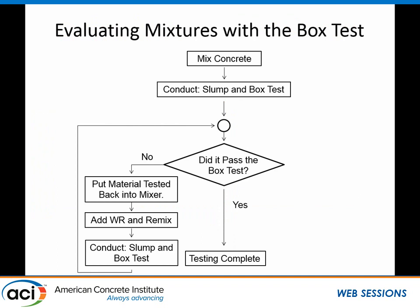The real power of this test: I can make a concrete mixture, run slump and the box test, and ask — did it pass? If the answer's no, you throw everything back into the mixer, add a known amount of water reducer, mix everything back up again, and run the test again. You may follow this loop over and over again until it does pass. Once it does, you record the amount of water reducer. Mixtures that take lots of water reducer are not useful. Mixtures that require less water reducer — those are the ones we want.